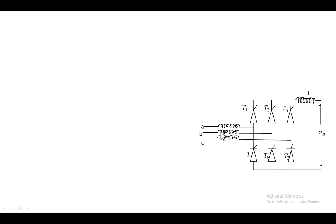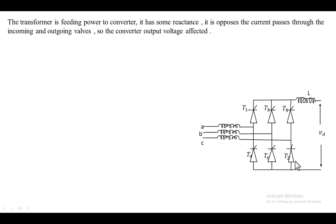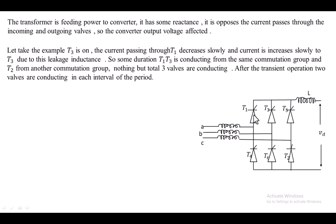This reactance does not allow the sudden increasing and sudden decreasing of the current to the incoming and outgoing valves. So it introduces the overlap angle during the commutation period as well as the turn-on of the valves. Here, we assume that T1 and T2 are already conducting. Now, we are applying the gate voltage to T3. Once T3 is on, the current passing through T1 has to decrease and the current through T3 has to increase. Both T1 and T3 conduct for some duration — this is the overlap angle.